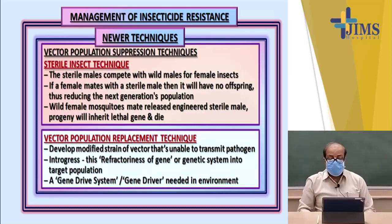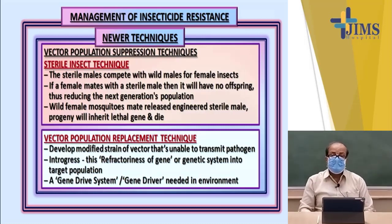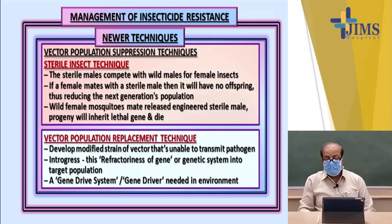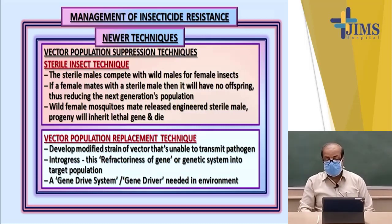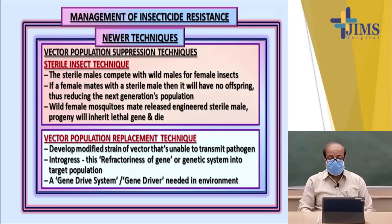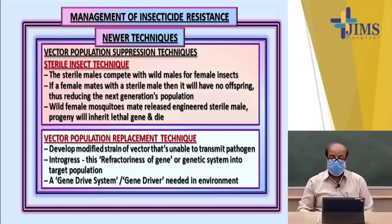Newer techniques include the sterile insect technique, in which males are made sterile by exposure to gamma rays. When these sterile males mate with wild females, there will be no offspring. Even wild female mosquitoes that mate with engineered sterile males will produce progeny that inherit a lethal gene and ultimately die. There is also a vector population replacement technique, in which a modified strain of the vector is developed that is unable to transmit the pathogen — this is known as introgression of refractoriness. A gene driver is deployed in the environment to promote this kind of replacement.